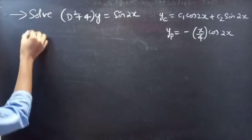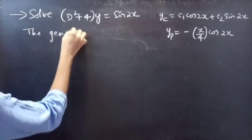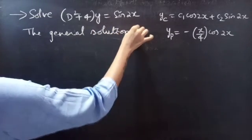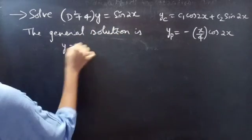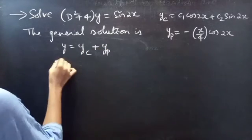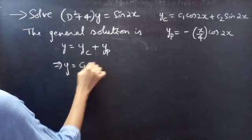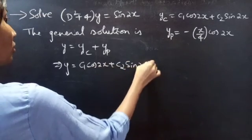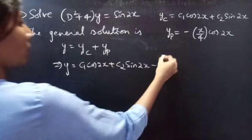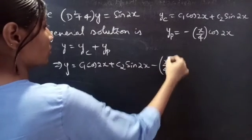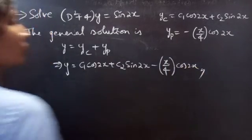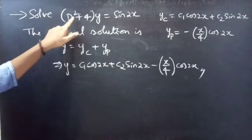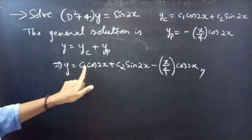Now, coming to the general solution: y = yc + yp, so y = c₁ cos 2x + c₂ sin 2x − (x/4) cos 2x. This completes the problem. We got two constants since the order is 2.